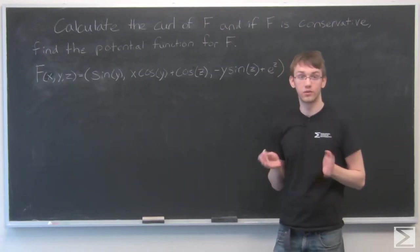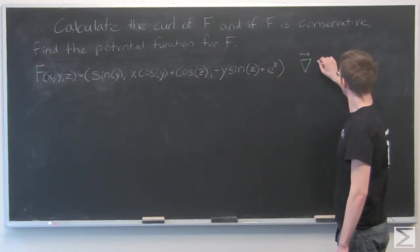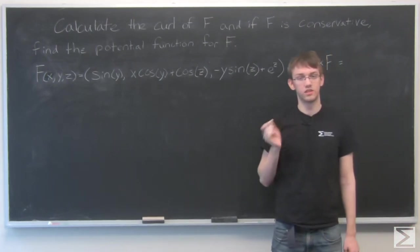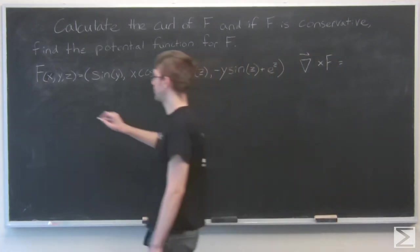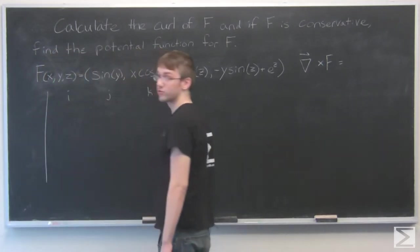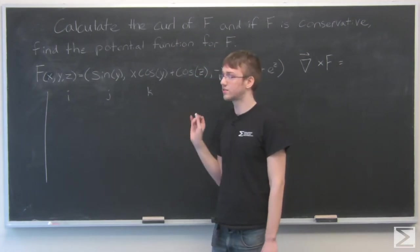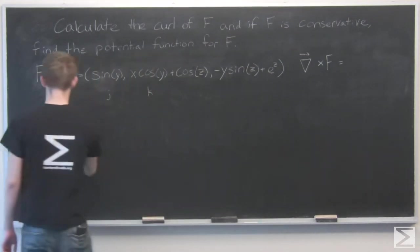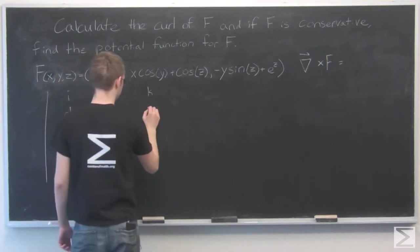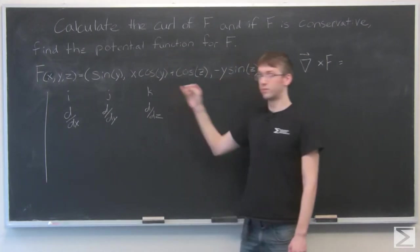The curl is the cross product of the gradient vector and f. To find that, we're going to take the determinant of a 3 by 3 matrix. The first row is i, j, and k. The second row is going to be the three partial derivatives: d/dx, d/dy, and d/dz. And the last row is going to be the components of f.